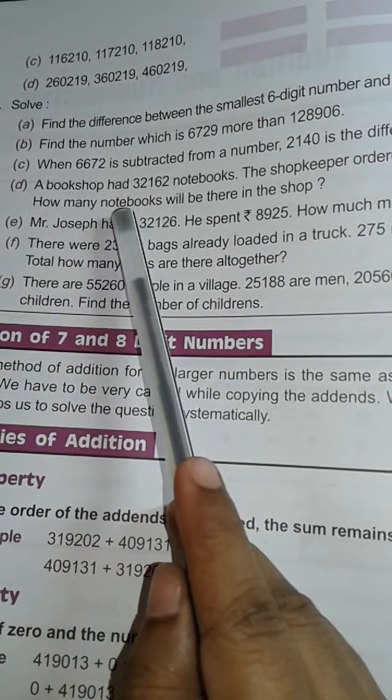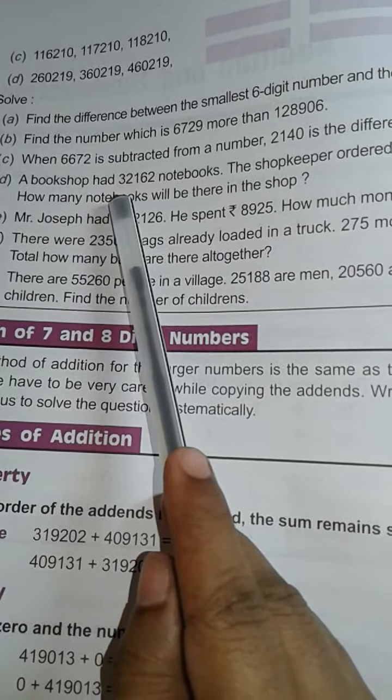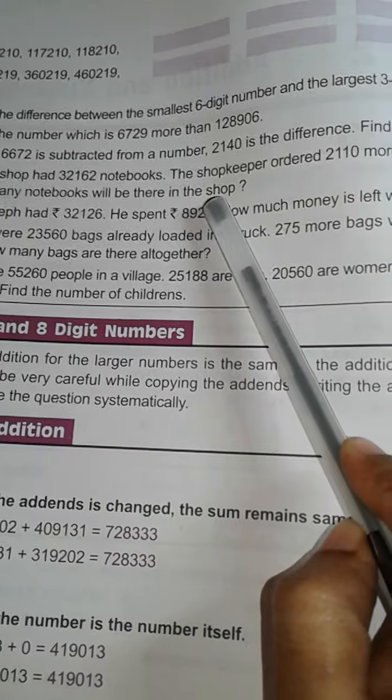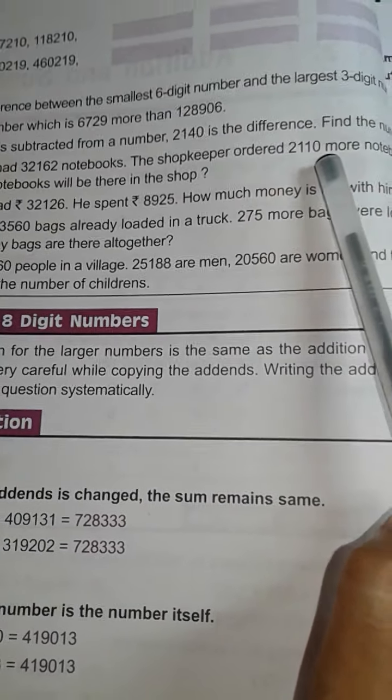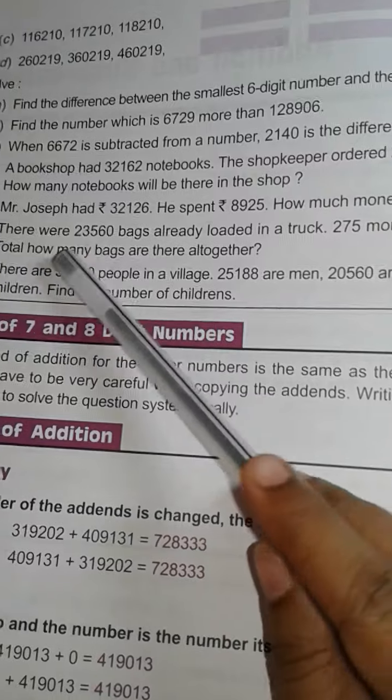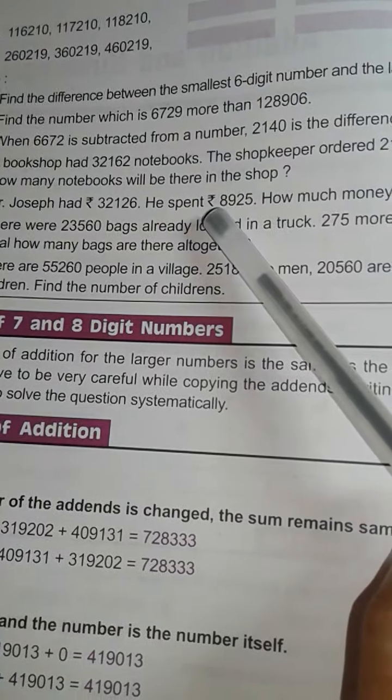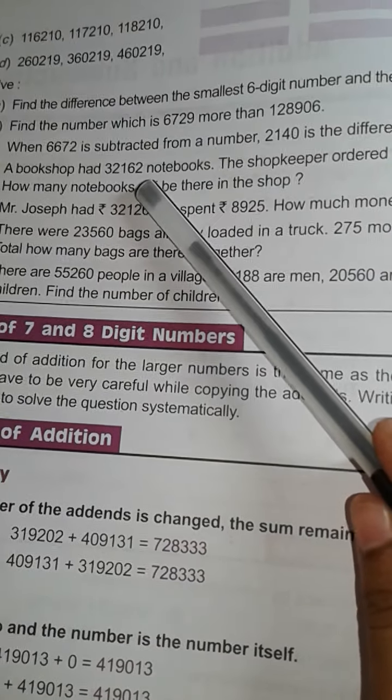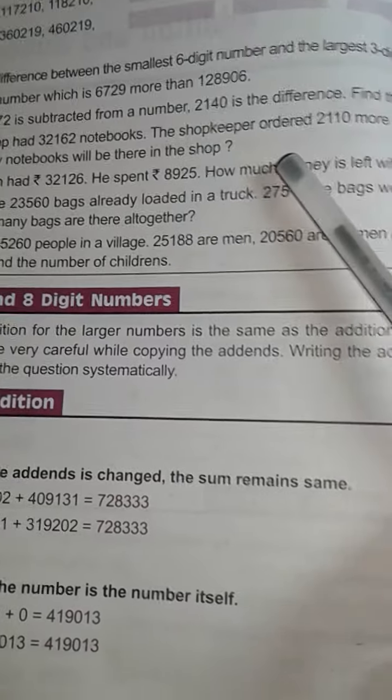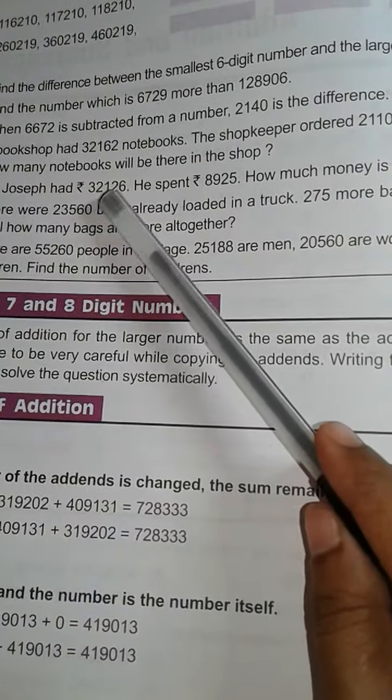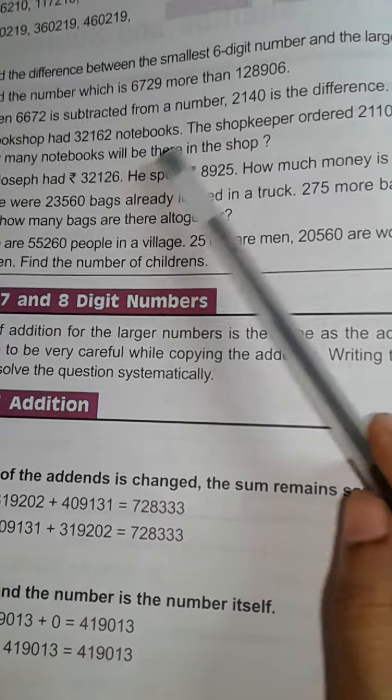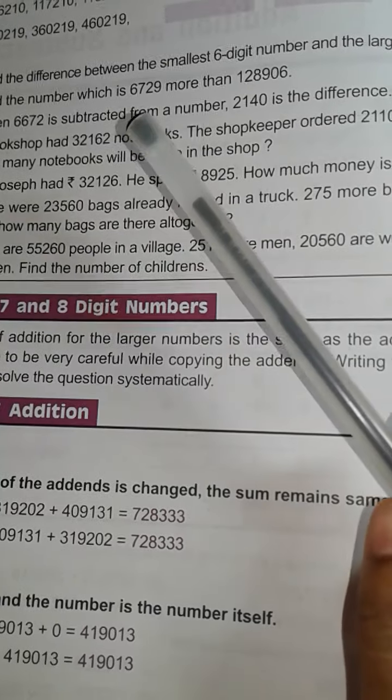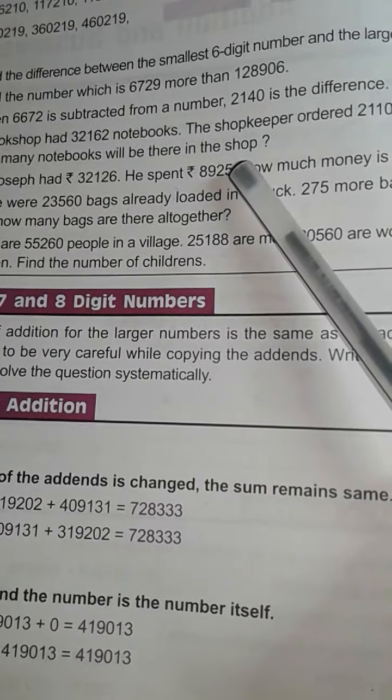D number. A bookshop had 32,162 notebooks. A shopkeeper ordered 2,110 more notebooks. How many notebooks will be there in the shop? Means children, a bookshop had this much books and the shopkeeper ordered more this much books. So here question is what? What is the total number of books in the shop? Means what do you have to do? Yes, addition. If you do addition, then you get the answer.